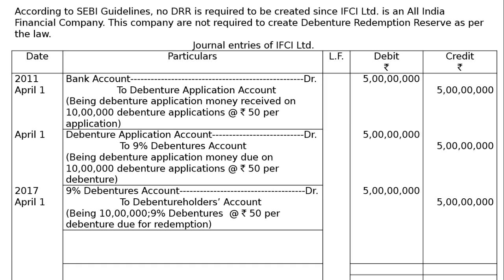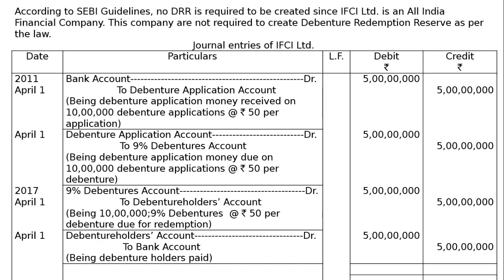For the redemption entry: debentures due for redemption are recorded at rupees 5 crores on the debit as well as credit side. On the same day, when we pay the debenture holders — Debenture Holders Account debited rupees 5 crores to Bank Account rupees 5 crores, being debenture holders paid. The totalling will be rupees 20 crores each in both debit and credit columns. This is the final answer.